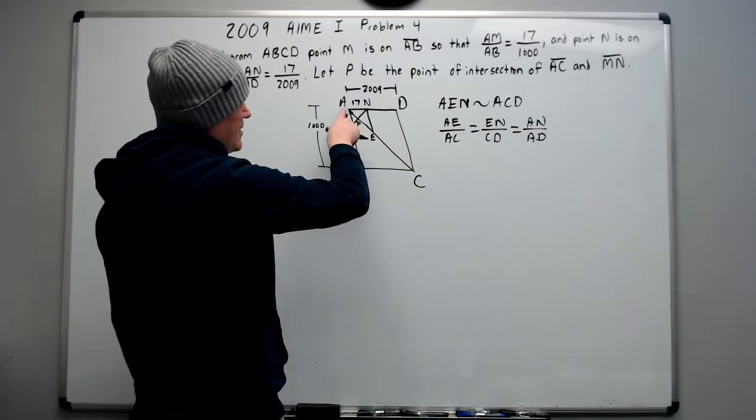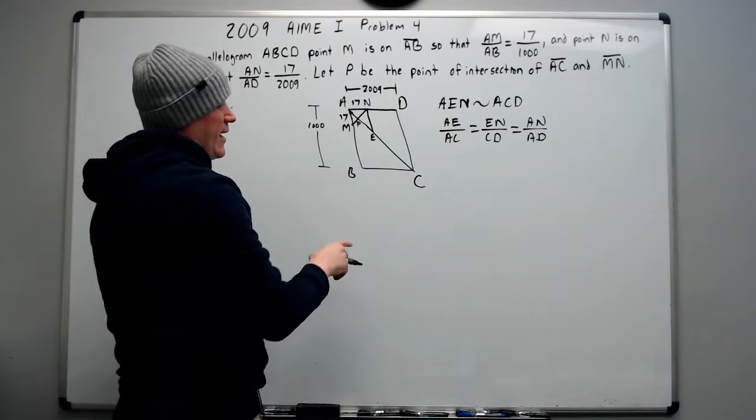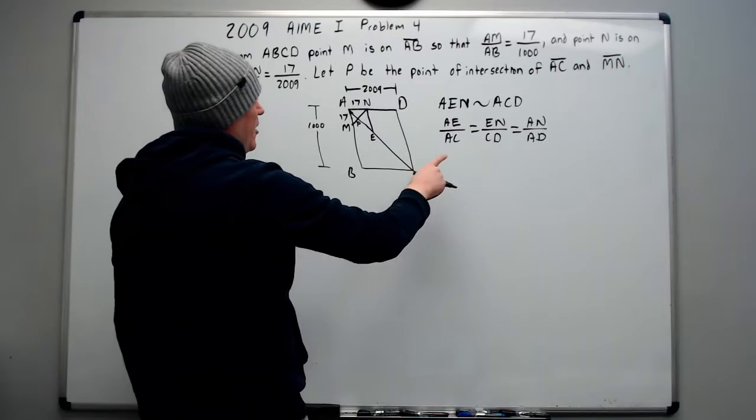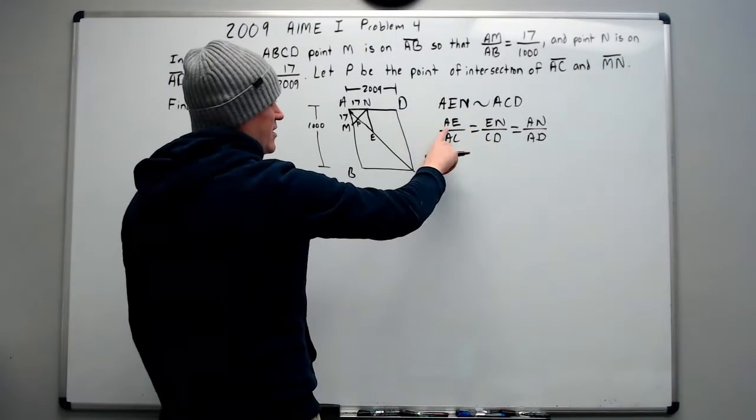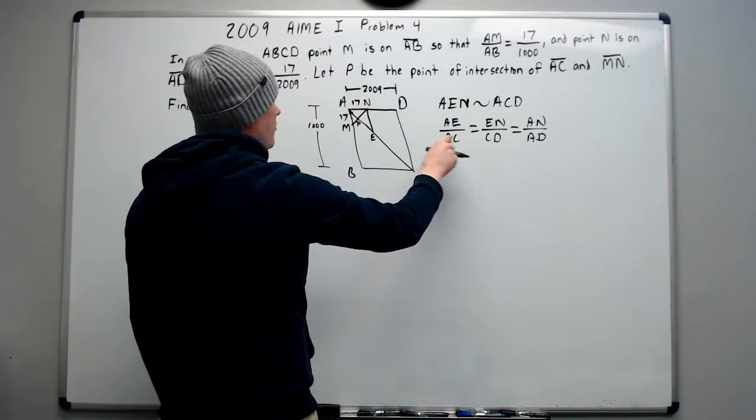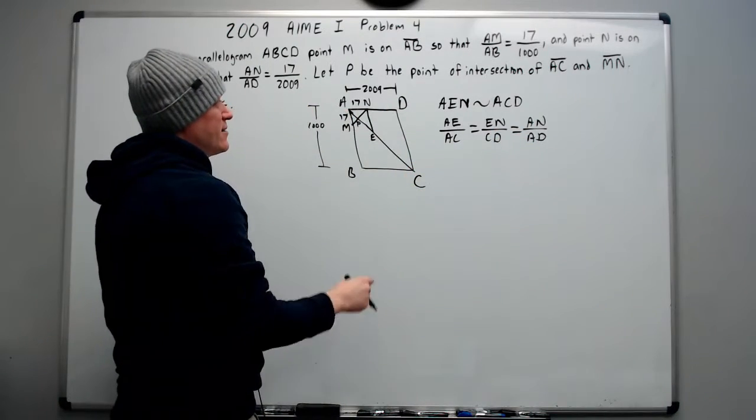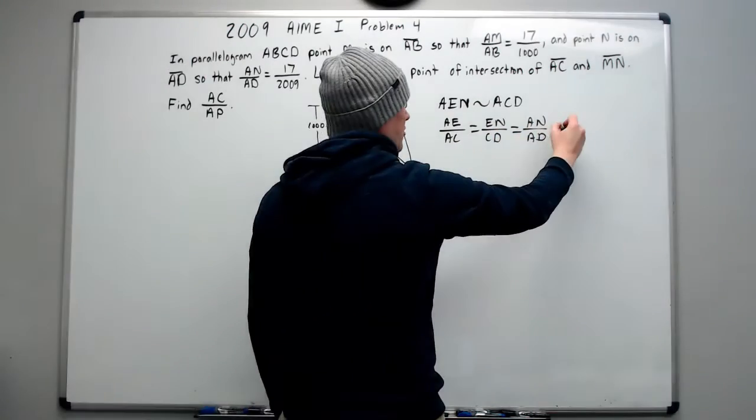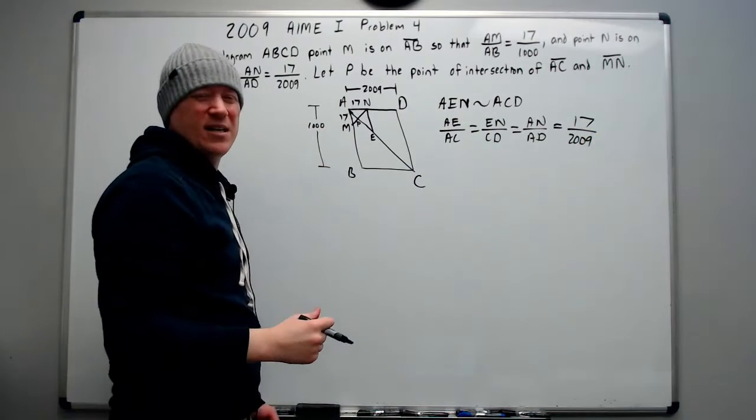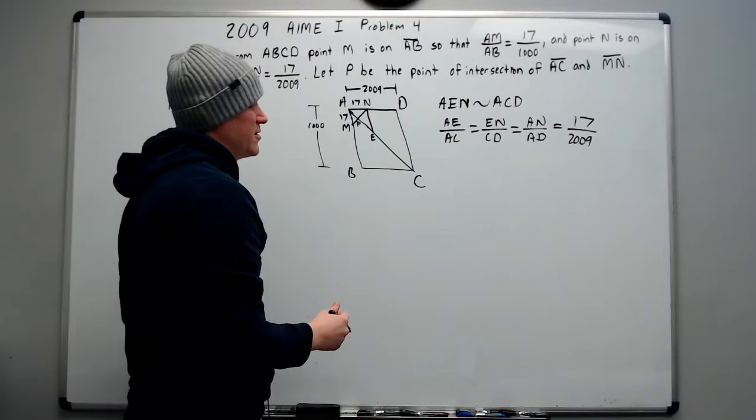So AE, just make out what you know now. We know that AE over AC is equal to EN over CD is equal to AN over AD. That's first two with first two, second two with second two, first and third with first and third. So now what do we do? Well, we got AE over AC, but we really don't want that. We just want AP over AC. Actually, the reciprocal of that.